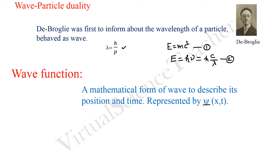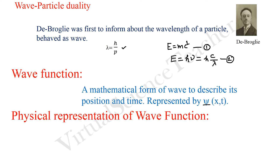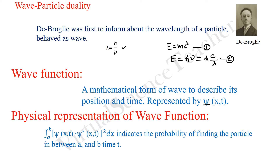What is the significance of the wave function? The wave function indicates probability. If we take the wave function and multiply it by its complex conjugate, this gives the probability density. I will discuss it in detail after two or three classes. Just remember that this wave function is an important part of quantum mechanics. If we integrate the probability density, we will get the total probability.